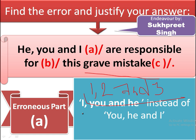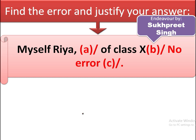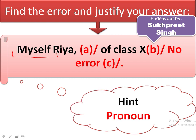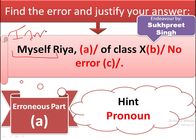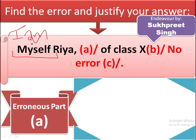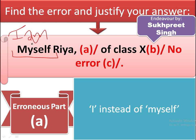Next sentence: 'Myself Ria of class 10.' This is a very grave mistake made by many students — you can never start introducing yourself using 'myself.' It is not correct at all. Simply replace 'myself' with 'I am': 'I am Ria of class 10,' not 'Myself Ria of class 10.' You cannot start a sentence with 'myself' for self-introduction.